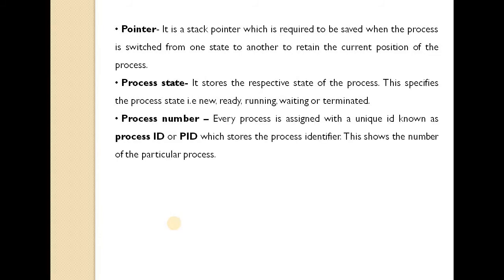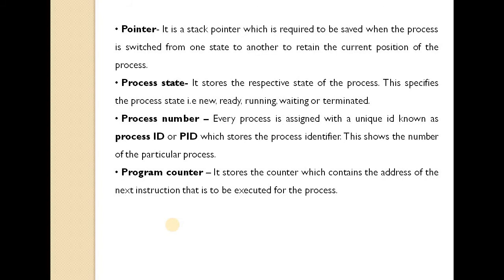The third field is process number. Every process is assigned a unique ID known as the process ID or PID, which stores the process identifier. The fourth field is program counter. It stores the counter which contains the address of the next instruction to be executed for a process. The program counter is a register which stores the address of the next instruction to be executed.